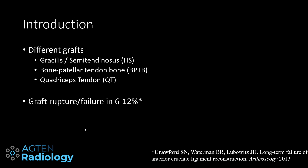One thing you need to realize is that there are different grafts that are being used. You can use gracilis or semitendinosus tendons from the hamstrings, bone patellar tendon bone graft, or quadriceps tendon grafts. These are the most commonly used ones. Sometimes they also use allografts and all of them have different properties and behavior on MRI, especially with regards to maturation.